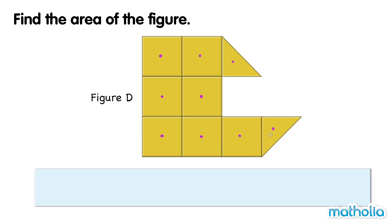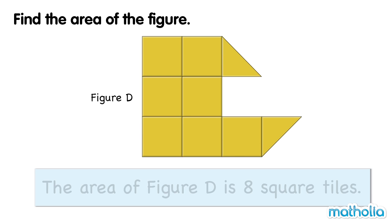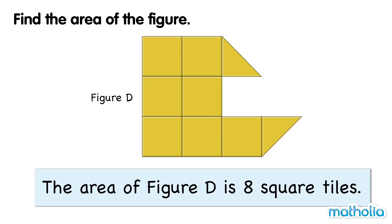Two triangle tiles is equal to one square tile. So the area of figure D is equal to eight square tiles.